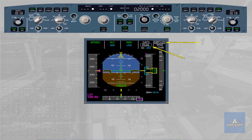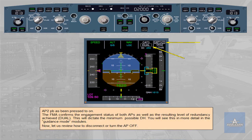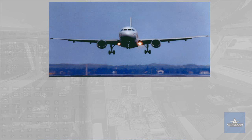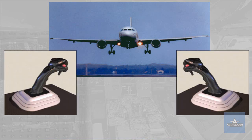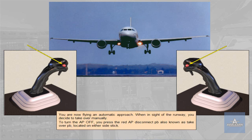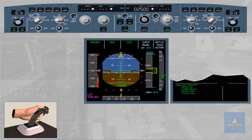Now, let us review how to disconnect or turn the autopilot off. You are now flying an automatic approach. When in sight of the runway, you decide to take over manually. To turn the autopilot off, you press the red Autopilot Disconnect push button, also known as the Takeover push button, located on either side stick. The weather is fine, you are number one for approach.